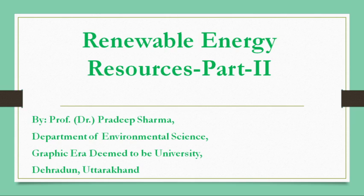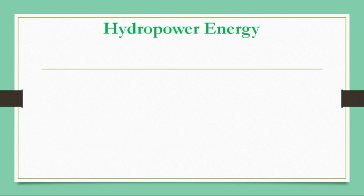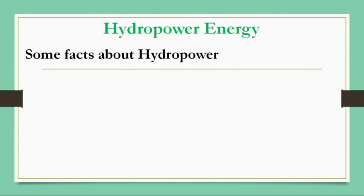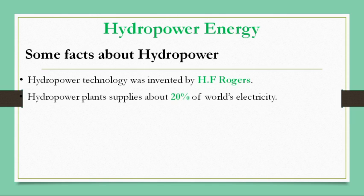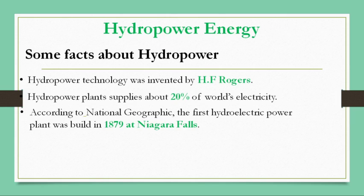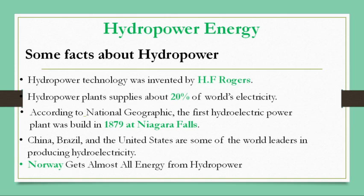Hydropower energy utilizes the kinetic energy of water for generation of electricity. Some facts about hydropower: the hydropower technology was invented by H.F. Rogers. A hydropower plant supplies about 20% of the world's electricity, and according to National Geographic, the first hydroelectric power plant was built in 1979 at Niagara Falls.